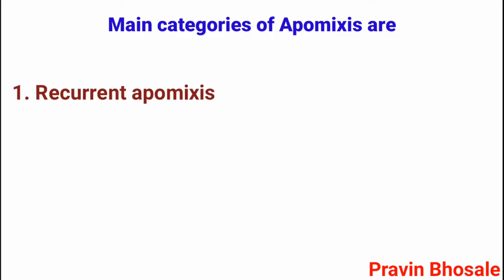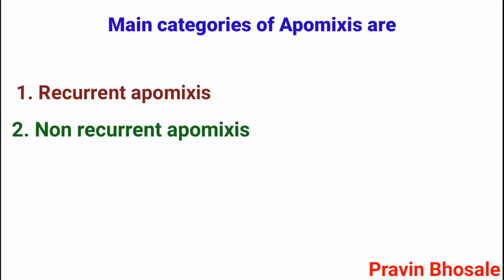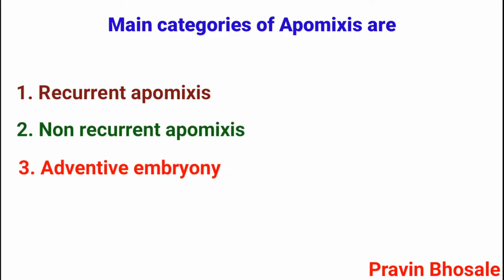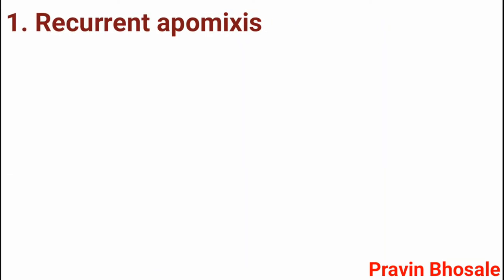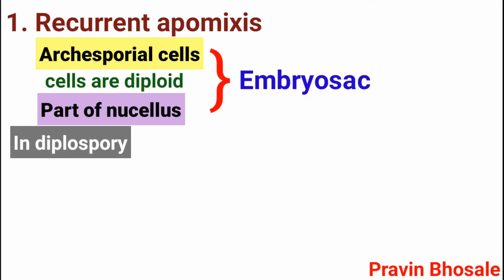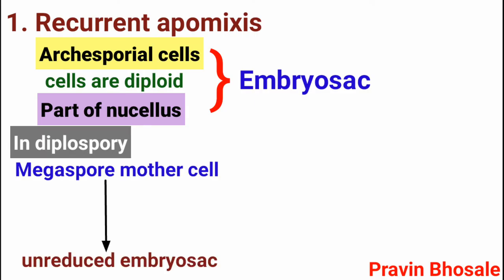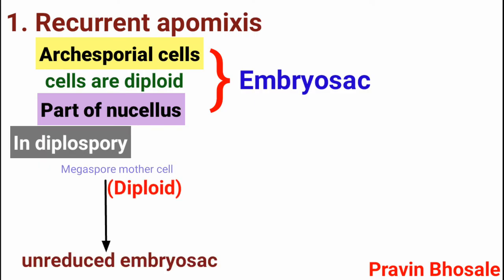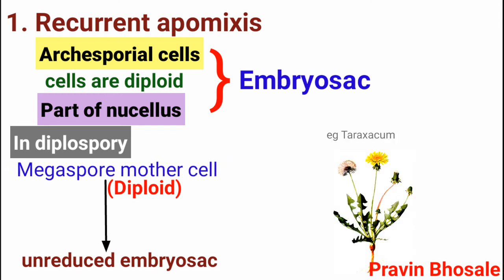The main categories of apomixis are recurrent apomixis, non-recurrent apomixis, and adventive embryony. In recurrent apomixis, archesporial cells or some other part of the nucellus — the cells being diploid — form the embryo sac. In diplospory, the unreduced embryo sac is derived from the diploid megaspore mother cell. Example: Taraxacum.